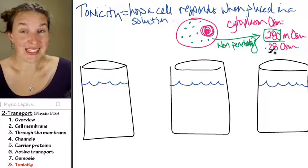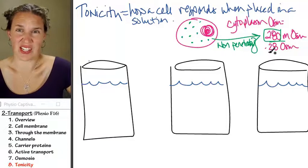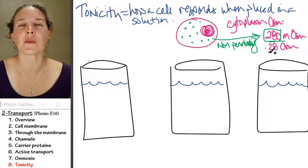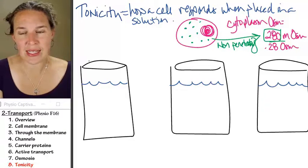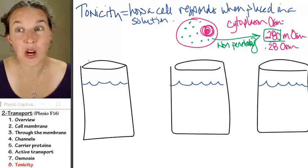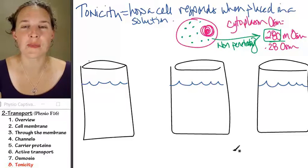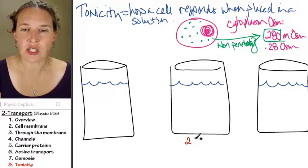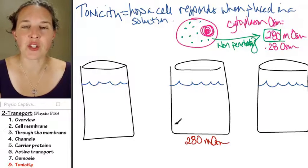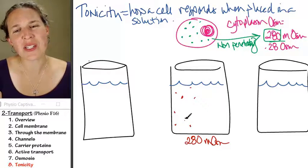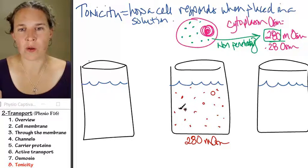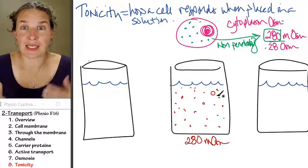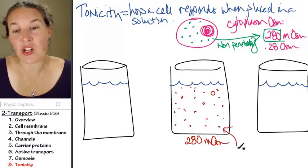So you can always assume that a cell has a concentration. It has stuff going on in there. Now, I'm going to give you a couple scenarios here. I've got three beakers going on. I'm going to tell you that this situation has a concentration of 280 milliosmoles, and these particles are non-penetrating.